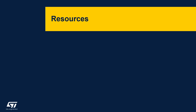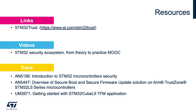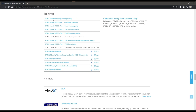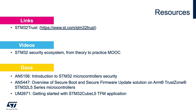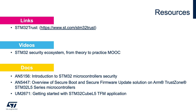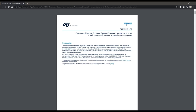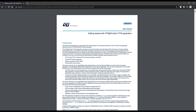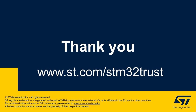We are at the end of this short overview. Some useful resources: you can find valuable information at the STM32 Trust landing page, which provides the best entry point to all material and resources, including links to the STM32 security ecosystem MOOCs videos. Keep the following documents at hand: AN5156 — Introduction to STM32 Microcontroller Security; AN5447 — Overview of the Secure Boot and Secure Firmware Update Solution on ARM TrustZone STM32L5; and UM2671 — Getting Started with the STM32 Cube L5 TFM Application. Thanks for your attention. Visit the STM32 Trust landing page at st.com/STM32Trust. I look forward to seeing you in the next video of the series.